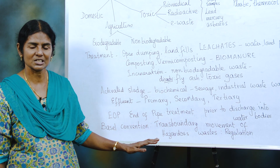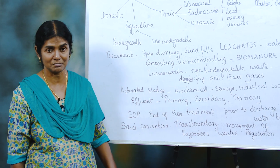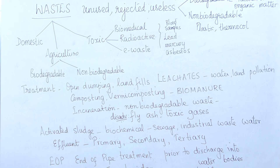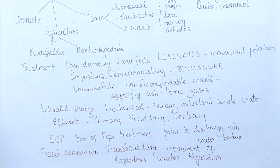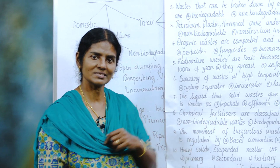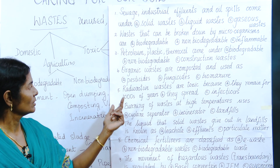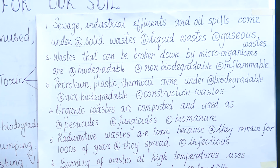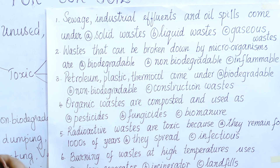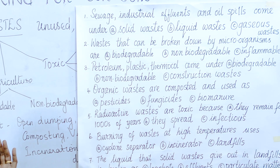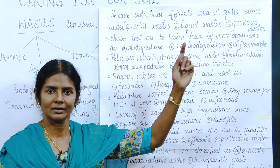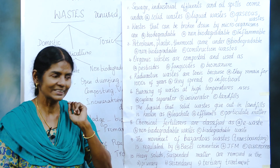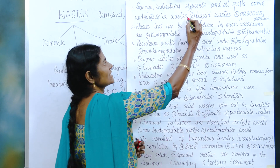These are the main points for caring for our soil, second part. Now some MCQs based on waste treatment. Sewage, industrial effluents, and oil spills — which category do they come under? Supposing you don't know about sewage or industrial effluents, remember oil. Oil at home — is it solid, liquid, or gas? It is a liquid. So what waste would it be? It would be liquid waste.